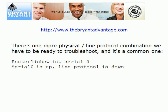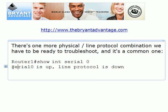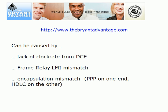Here's a more common one: serial zero is up, but line protocol is down. Physically everything is fine — the cable is there, no problems — but logically it's down. This can be caused by a lack of clock rate from the DCE side. With a point-to-point DTE/DCE connection, the DCE must supply clock rate to the DTE; if you forget the clock rate command, the line protocol will go down. A Frame Relay LMI mismatch can also cause this, which is more common in home labs.